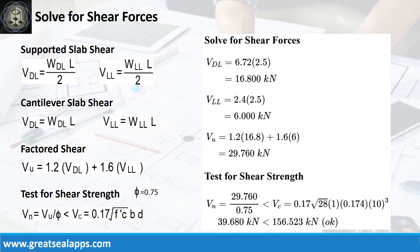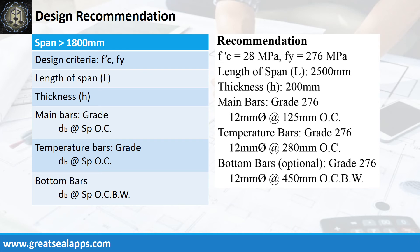The shear force from dead load is 16.8 kN and live load is 6 kN for a factor shear force of 29.76 kN. The nominal shear force is 39.68 kN less than 156.523 kN concrete capacity. Design recommendation as follows: